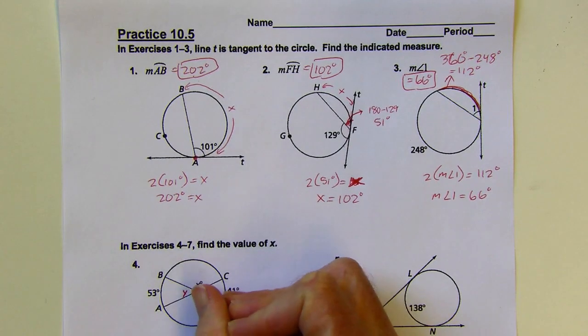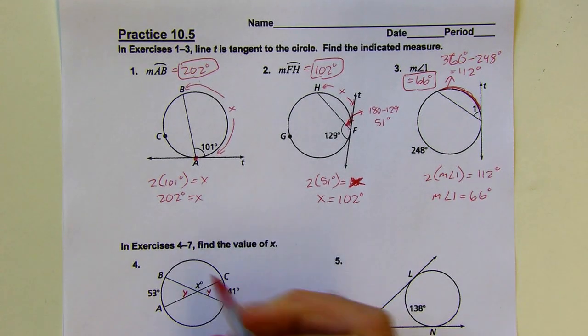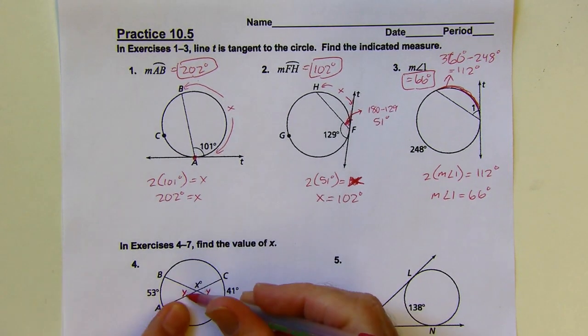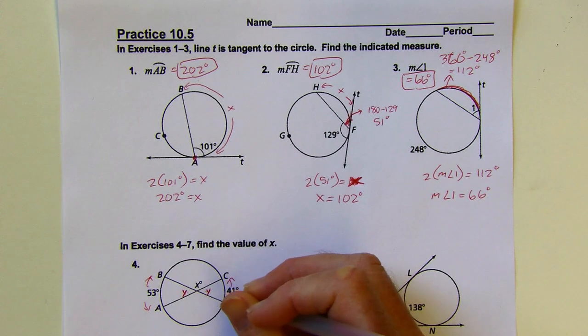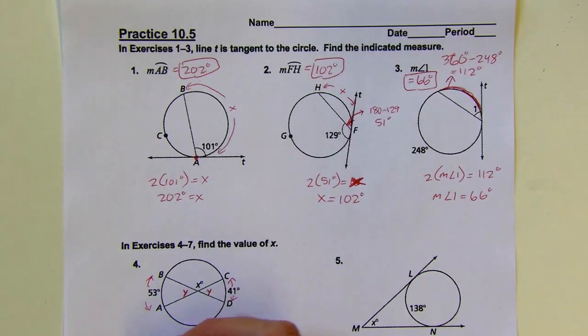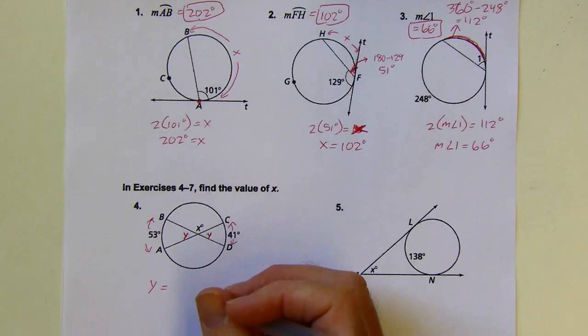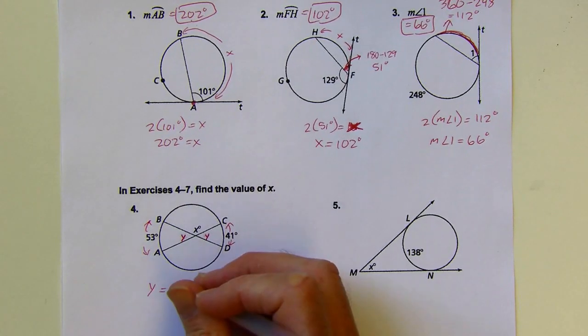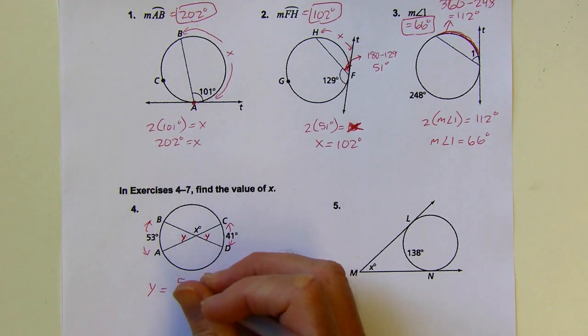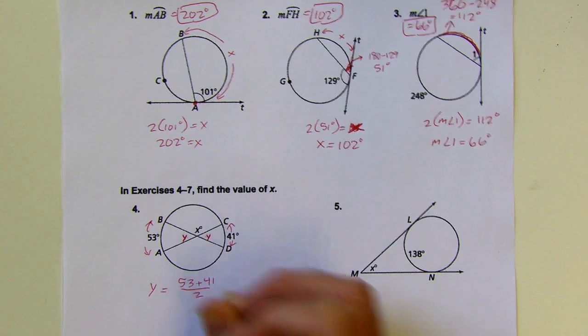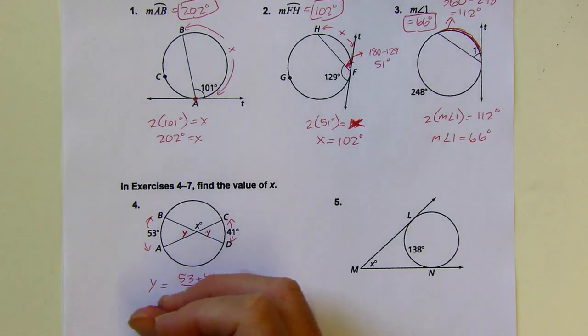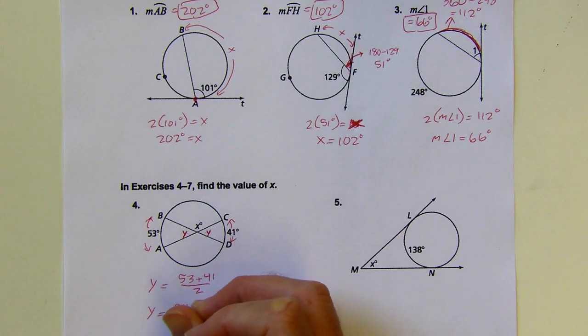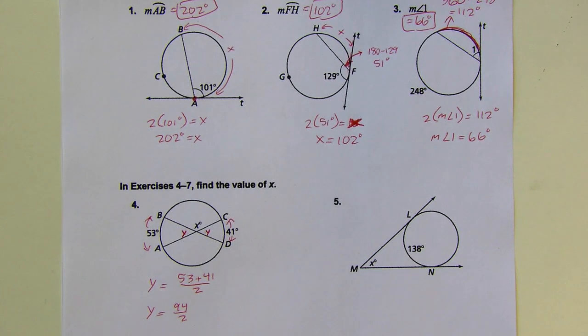This would also be Y by vertical angle, so it doesn't matter which one I use. Y is going to be the average of the two arcs that are intercepted by those lines that are intersecting each other. Y is going to be the average of 53 and 41. To find the average, I add them together and then divide by 2. So 53 plus 41 gives me 94, divide by 2, and I've got 47.